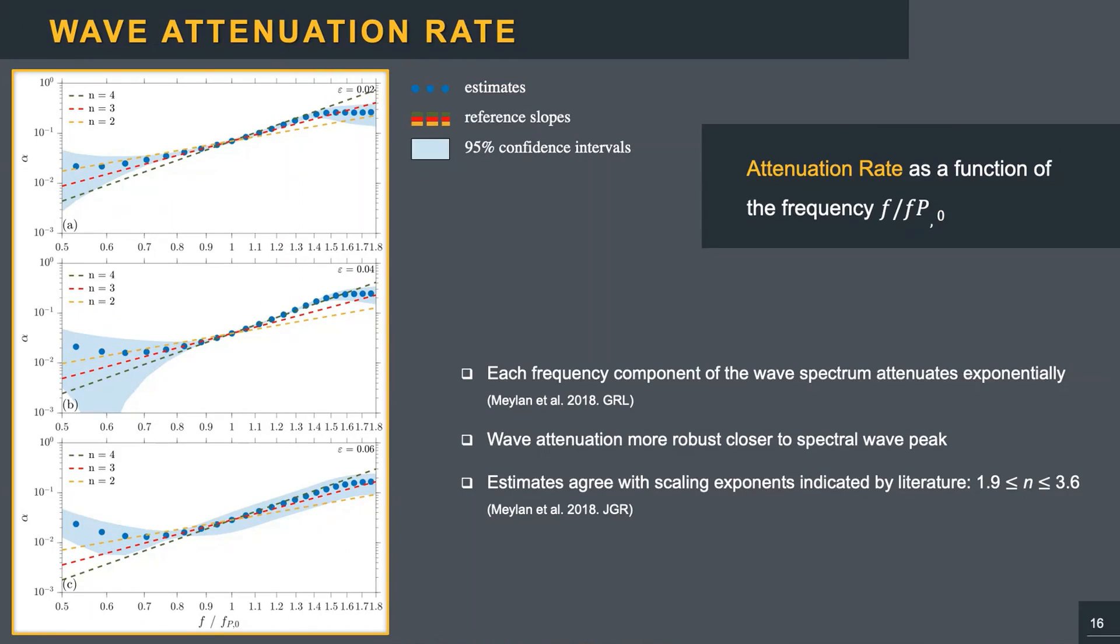This figure shows the attenuation as a function of the frequency, normalized by the peak frequency of the incident wave field. An overall attenuation rate is computed with an ordinary least-square estimator, using all records from the five pressure sensors. The shaded area represents the 95% confidence intervals, and the yellow, red, and green dashed lines represent the reference slopes f to the power of n, with n equal to 2, 3, and 4. This is because field data suggests that wave attenuation scales with frequency following this relation. It's important to mention that waves behave linearly, and so each estimate can be considered as the attenuation of a monochromatic wave. For all the steepness tests in the range 0.8 to 1.4 Fp, where the energy content of the wave spectrum is higher, the experiment agrees with the scaling exponents indicated by the literature, with an empirical attenuation slightly closer to n equal to 4 than 3 or 2.